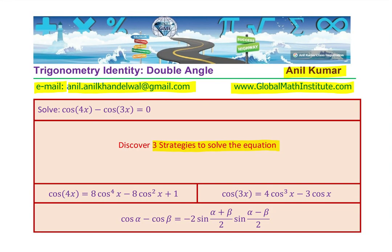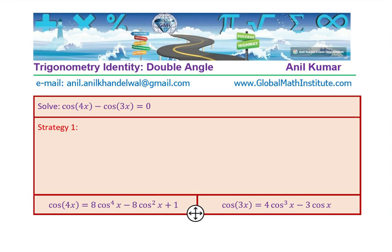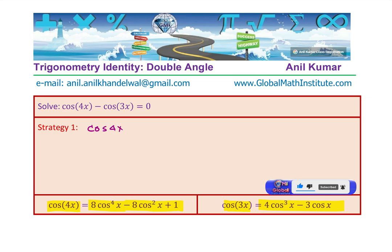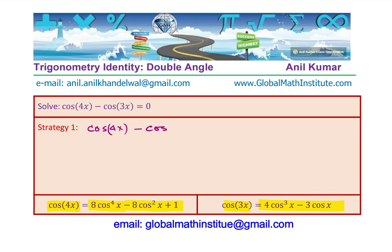Let's look into our strategy number 1. In strategy 1, we are making use of the given formula, which is cos 4x is 8 cos to the power of 4x minus 8 cos square x plus 1 and cos 3x is given by this formula. You have this equation, which is cos of 4x minus cos of 3x equals to 0.